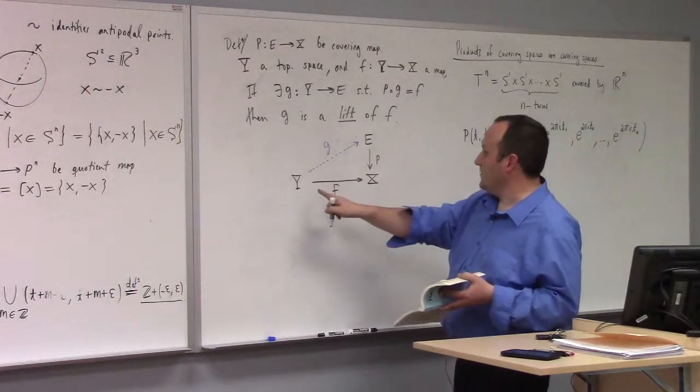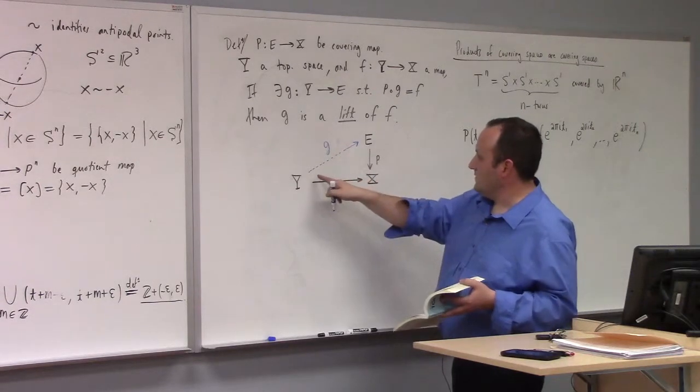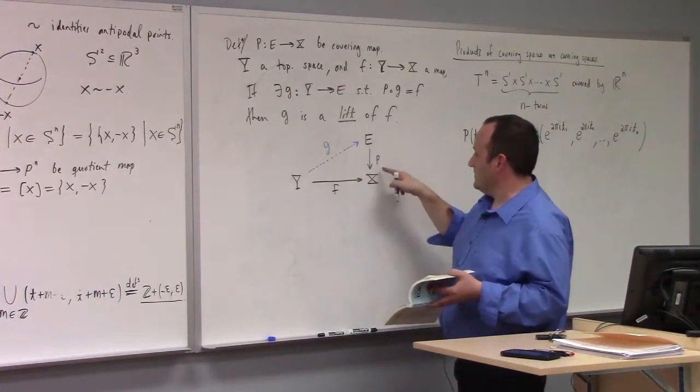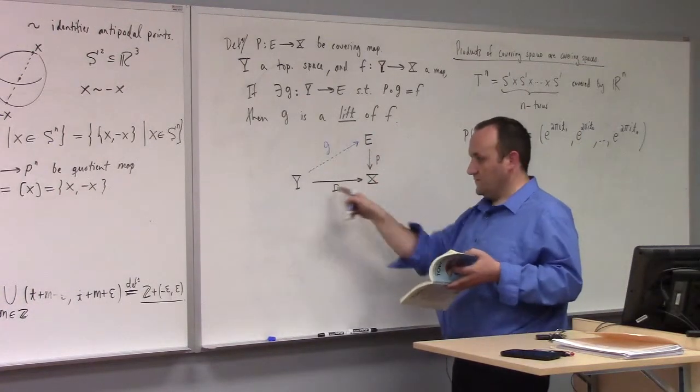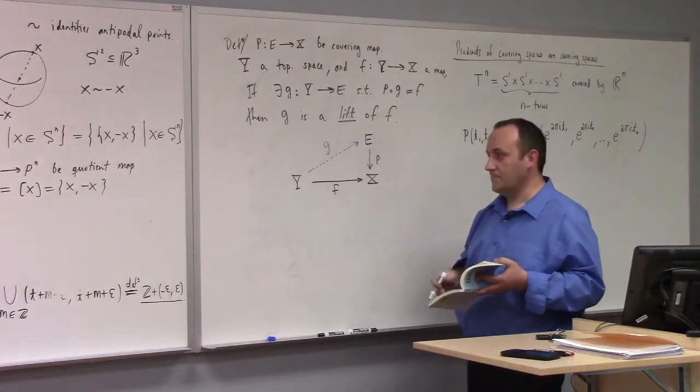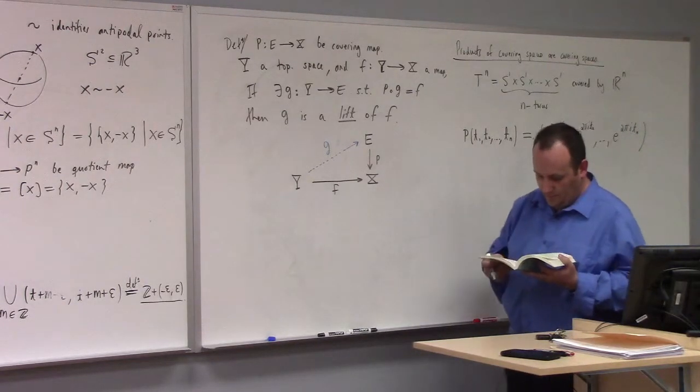So what does this diagram commute mean? The diagram commuting means p composed of g would be like this, and f goes like that.